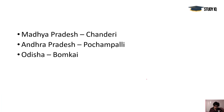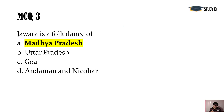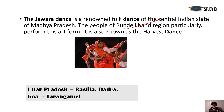Other important sarees: Bhomkai is famous in Odisha, Panjampal in Andhra Pradesh, and Chanderi in Madhya Pradesh — two questions have been asked regarding Chanderi. Jawara is a harvest festival dance in Madhya Pradesh; Jawara is the particular crop, and when the harvest is very good, it is celebrated mainly in the Bundelkhand region of northern Madhya Pradesh. Other important dance forms for Uttar Pradesh include Fog dance, Raslila, and Dadra; Tarangamel is for Goa.